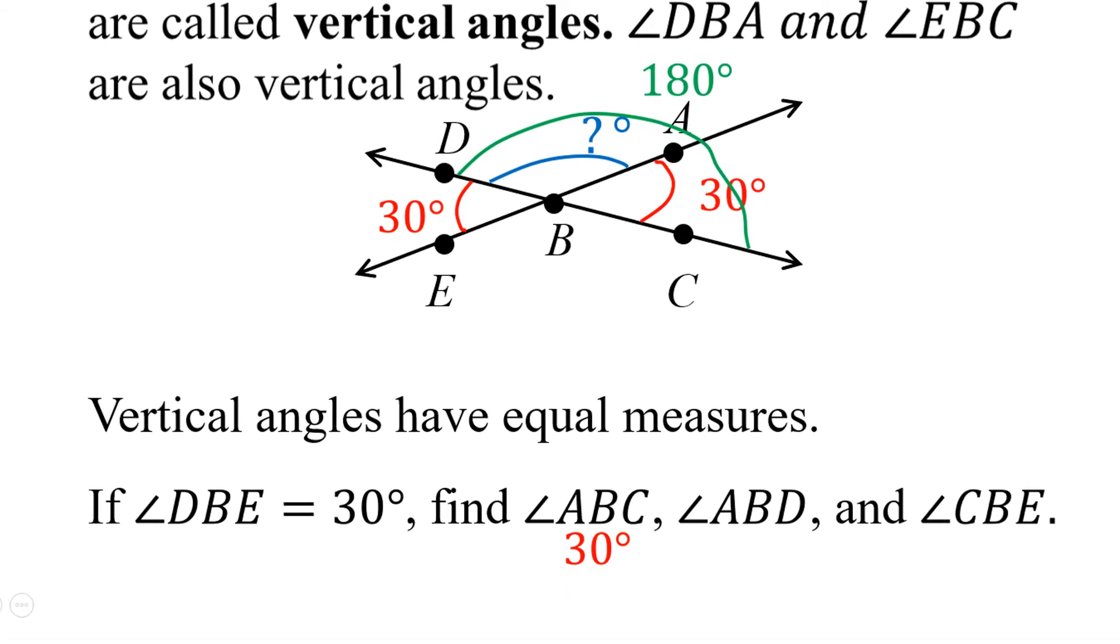In other words, if you take 180 and subtract 30, the remaining 150 degrees has to be the measure of angle DBA.